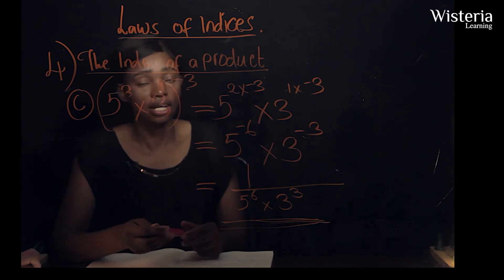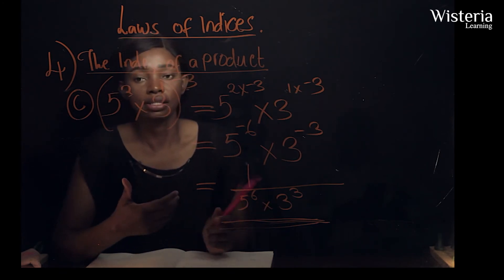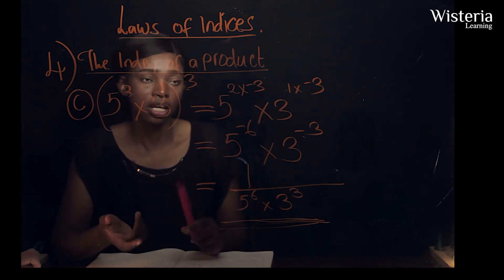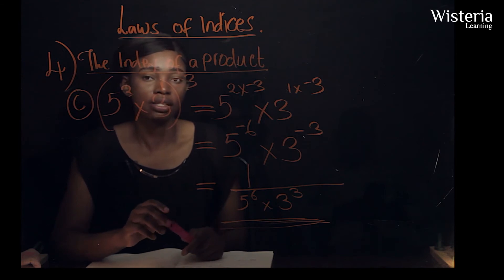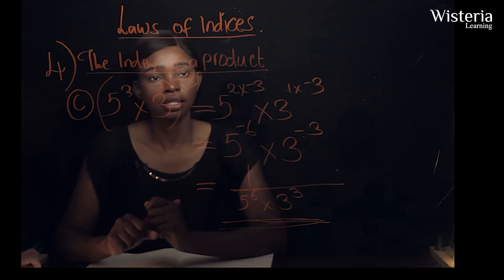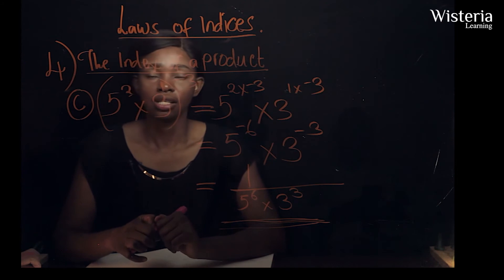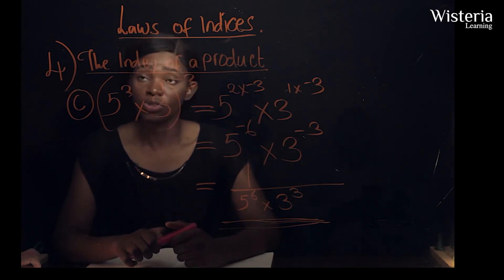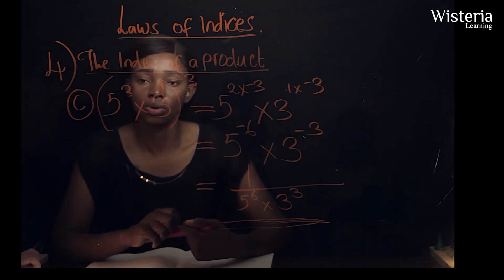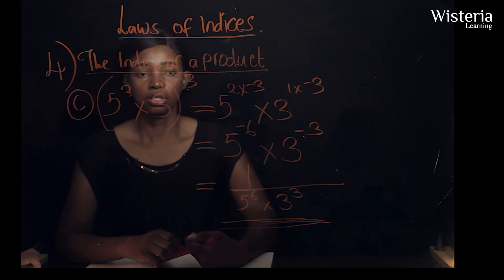Remember I stated earlier that you can write indices using positive and negative form — you can convert a negative index into a positive index and vice versa. Now we're going to continue with the last law of indices, which is the index of a quotient.